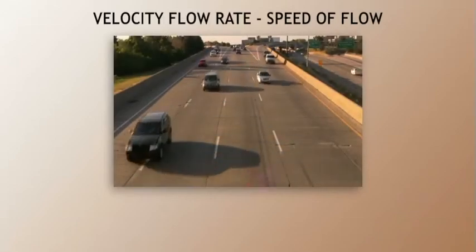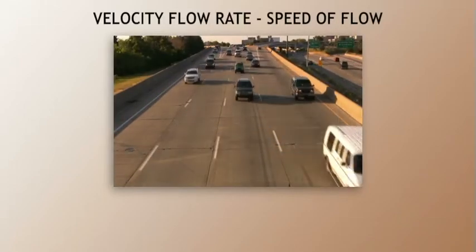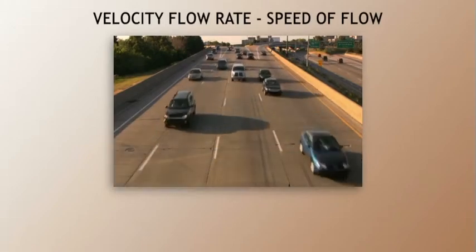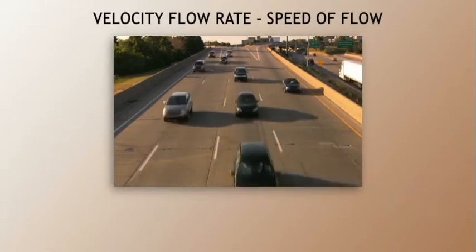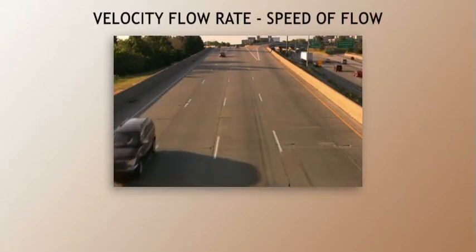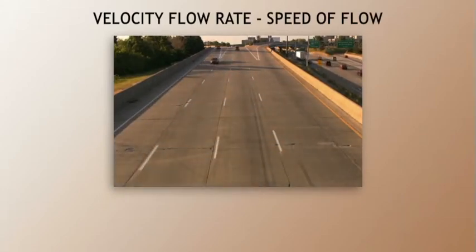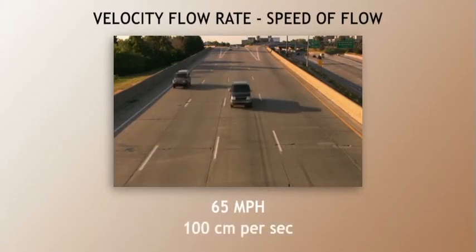The velocity flow rate relates to how fast the blood is flowing. Again, look at the cars on this freeway. Ask yourself, how fast are the cars going? This is the flow velocity. The units are related to distance and time, such as 65 miles per hour, or in the case of blood, 100 centimeters per second.